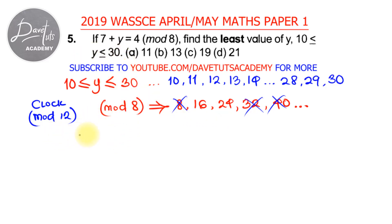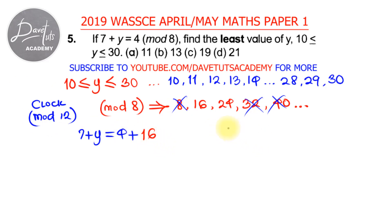We have 7 plus y is equal to 4 under modulo 8. Under modulo 8, this 4 is the remainder, which gets added to the multiples of 8. Since 8 is knocked out, the next multiple we can use is 16, giving us 7 plus y equals 4 plus 16. The other case is 7 plus y equals 4 plus 24.